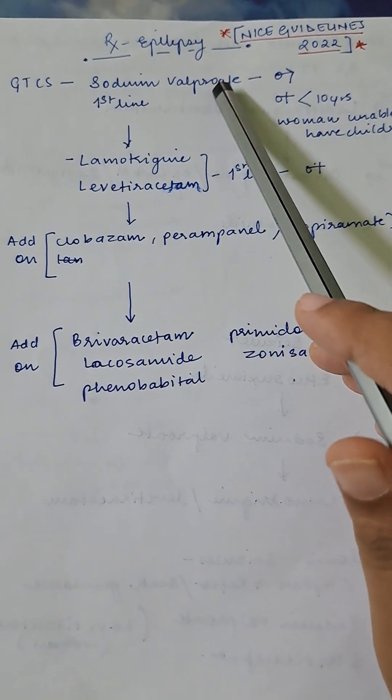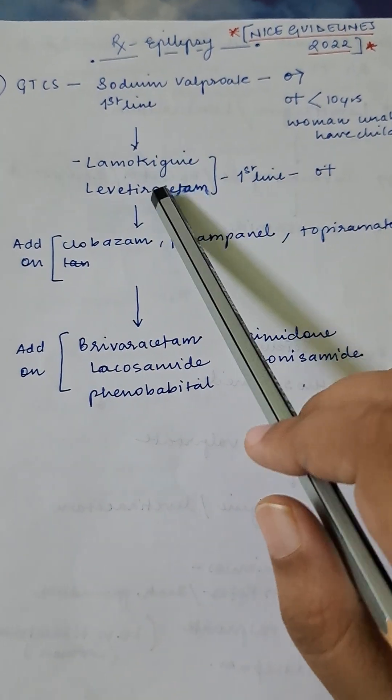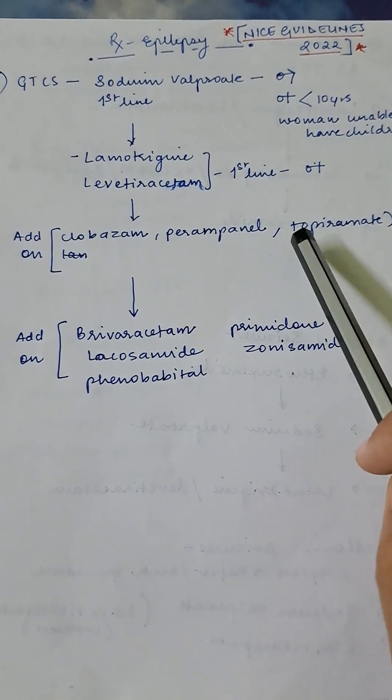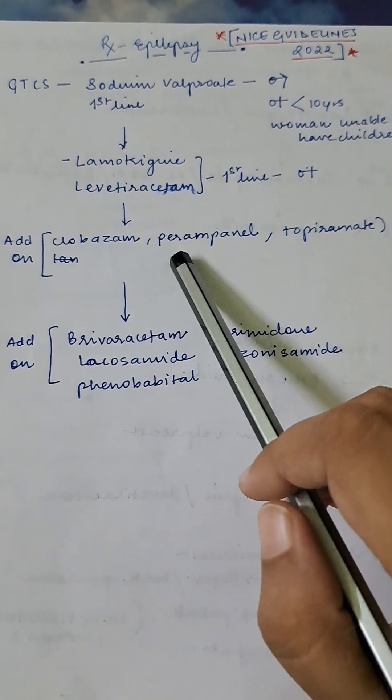If these treatments are unsuccessful, you can add on clobazam, perampanel, or topiramate, either of these.